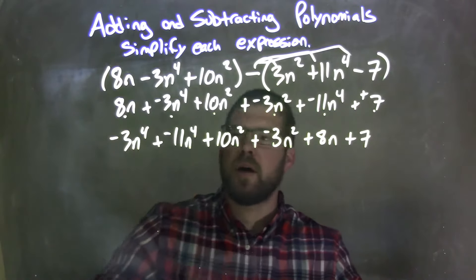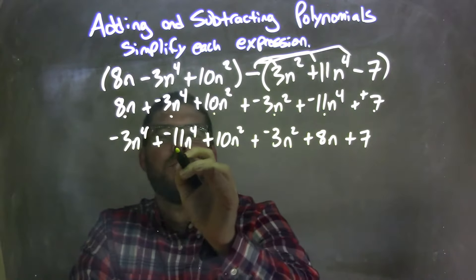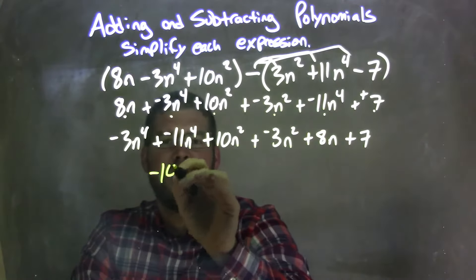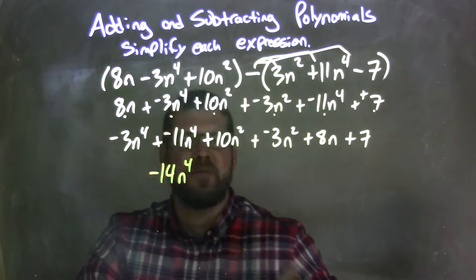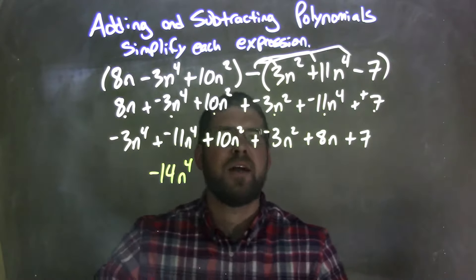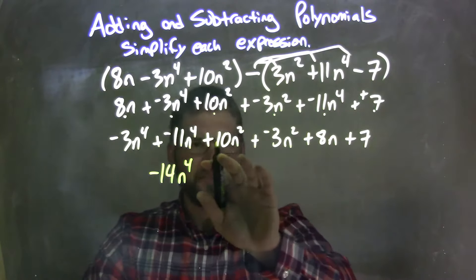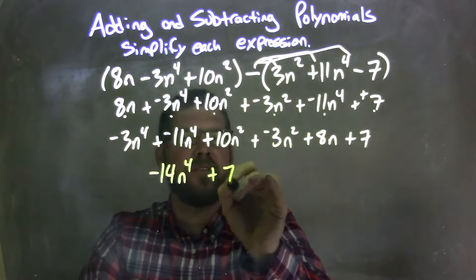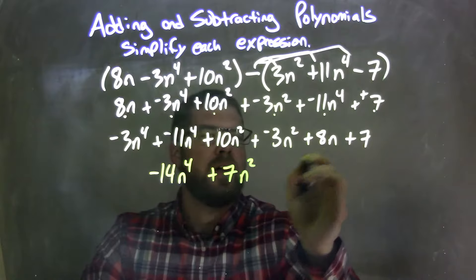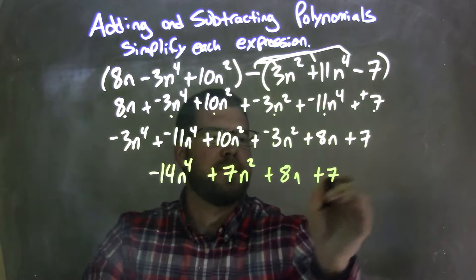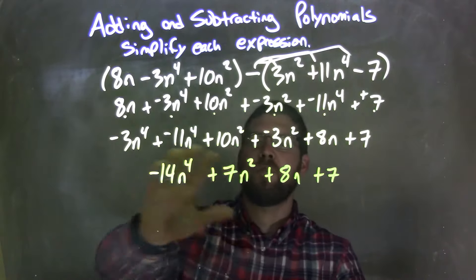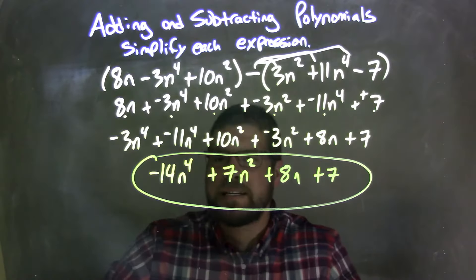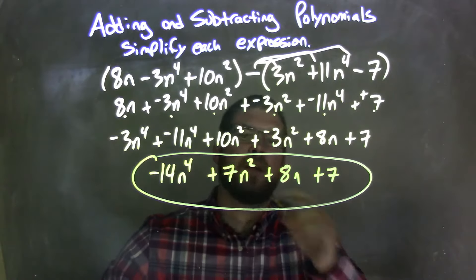So now let's combine our like terms and simplify that. Negative 3n to the 4th plus negative 11n to the 4th is negative 14n to the 4th. Then my second power: 10n squared plus a negative 3n squared is 7n squared, so plus a 7n squared here. And then we have a plus 8n and then plus a 7. And there we have it — our final answer: negative 14n to the 4th plus 7n squared plus 8n plus 7.